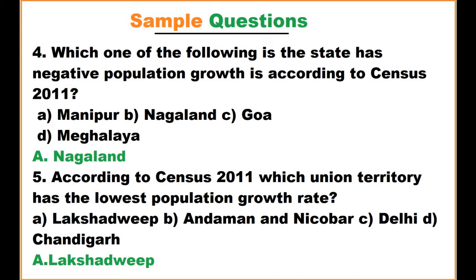According to the 2011 census, which union territory has the lowest population growth rate? The options are Lakshadweep, Andaman & Nicobar, Delhi, and Chandigarh. The answer is Lakshadweep.